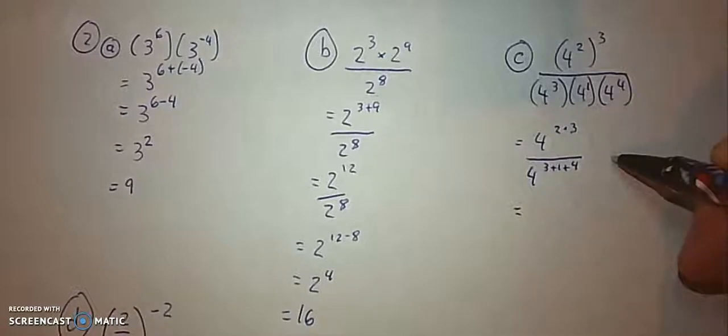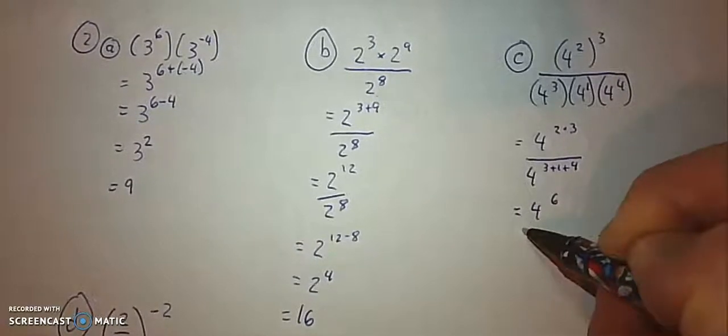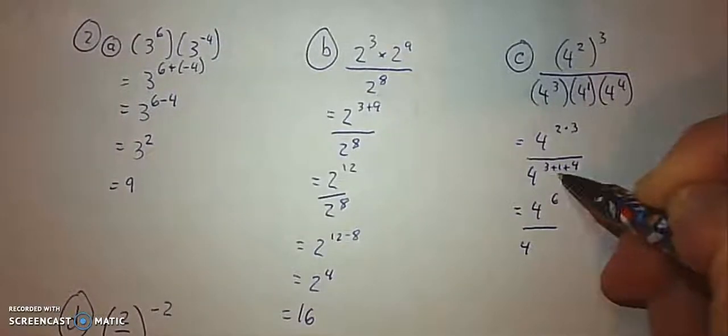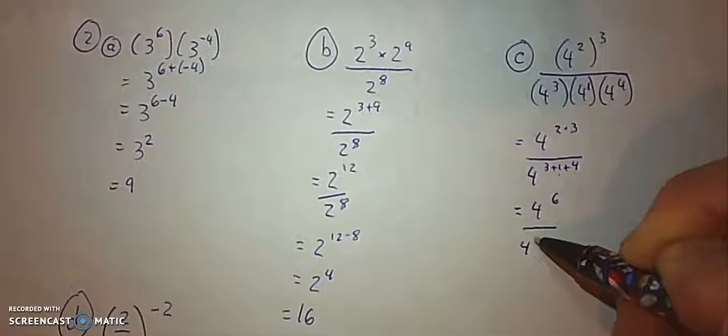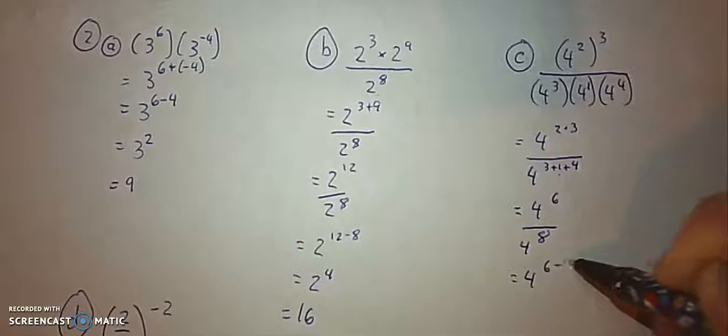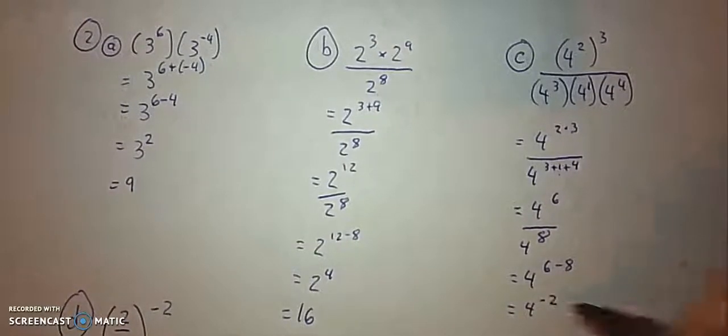So this will actually work out to be 4 to the power of 3 plus 1 plus 4. Simplifying each of these separately, the numerator becomes 4 to the power of 6, because that's 2 times 3, over 4 to the power of, well, 3 plus 1 is 4, plus another 4 is 8. Now I can actually write this as 4 to the power of 6 minus 8, which is 4 to the power of negative 2.